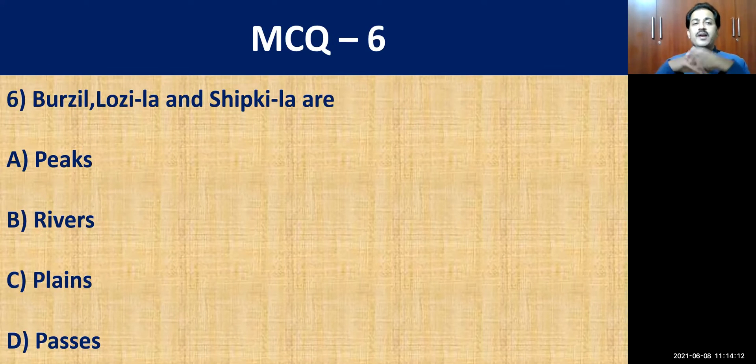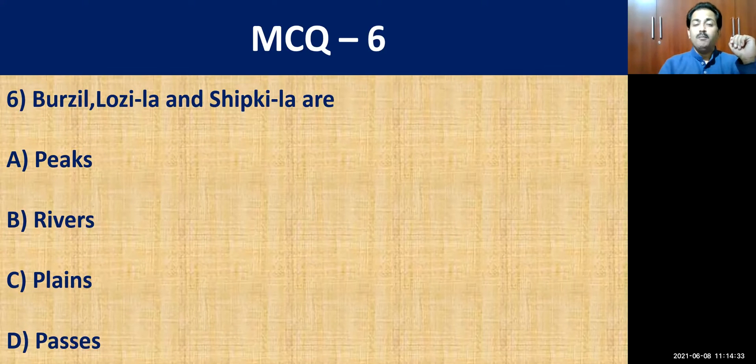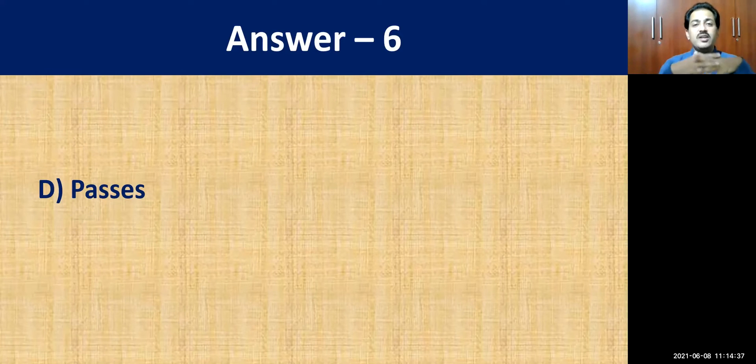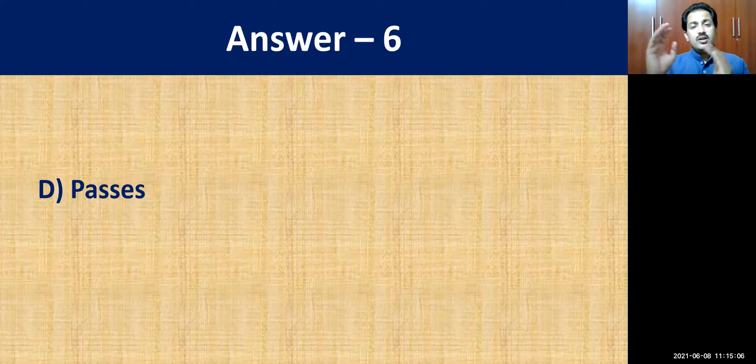MCQ question number six: Burzil, Lozila, and Shipkila — these are what? Whether they are peaks, rivers, plains, or passes? These are mountain passes. Shipkila, Lozila, Burzil, and Zojila are all mountain passes which provide good transportation from one area to another in this hilly region. They also attract many tourists across the world for their scenic beauty.